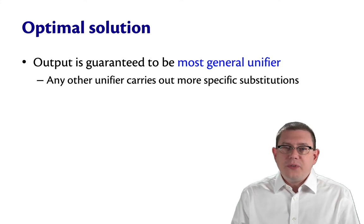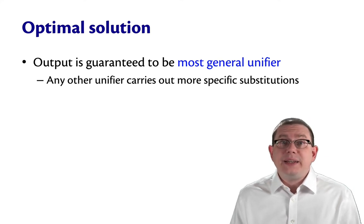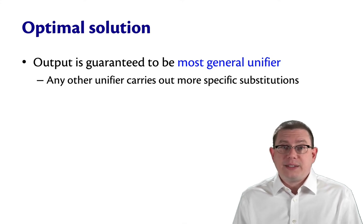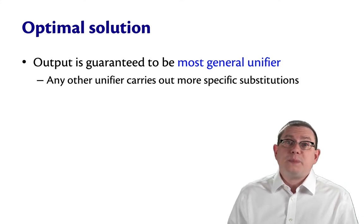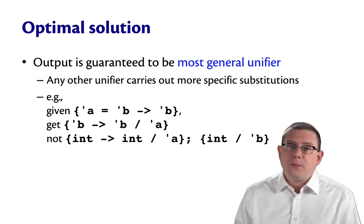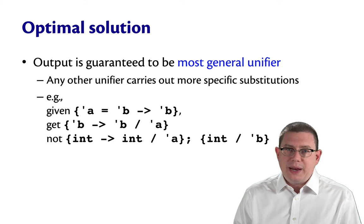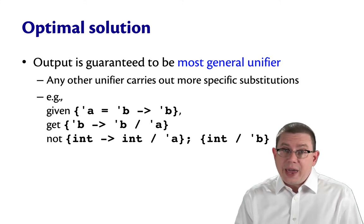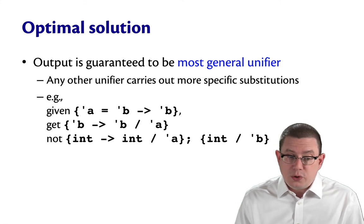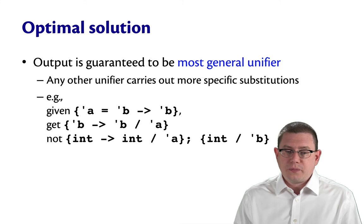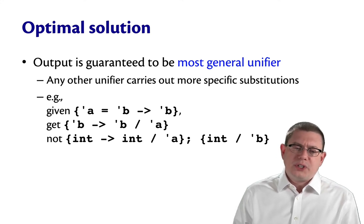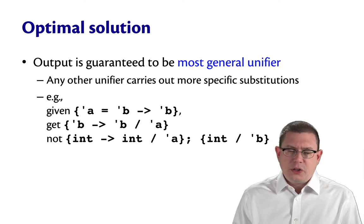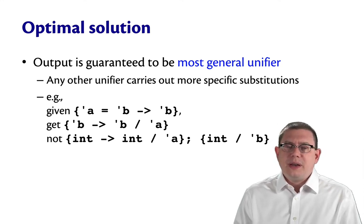It turns out the unification algorithm is actually optimal in a particular sense: the output is guaranteed to be the most general unifier for that set of equations. Any other unifier would carry out more specific substitutions. For example, given the constraint set alpha equals beta arrow beta, the unification algorithm will output: substitute beta arrow beta for alpha. It will not output something more complicated, like first substituting int arrow int for alpha and then int for beta, so you get int arrow int on both sides. Now that is a unifier — if you apply that substitution to the original equations, both sides end up being the same.